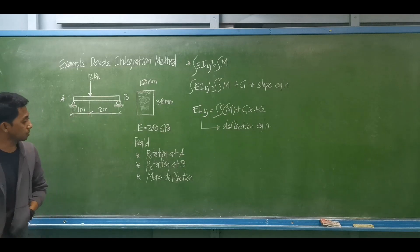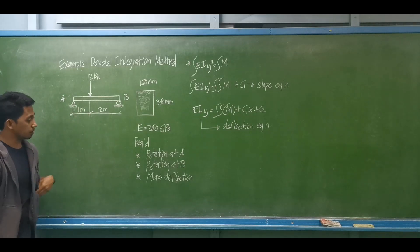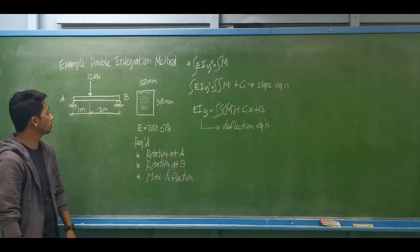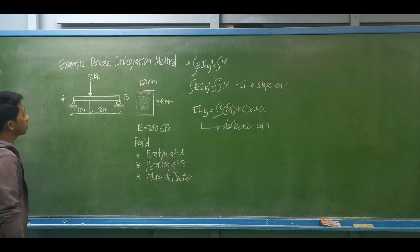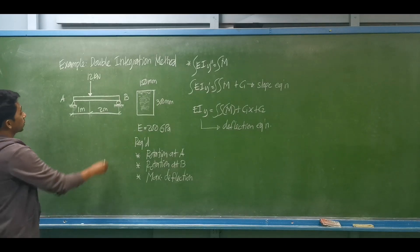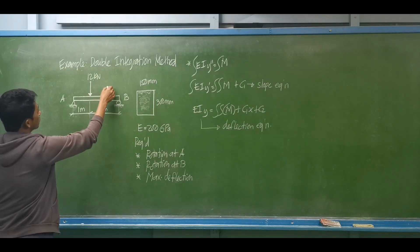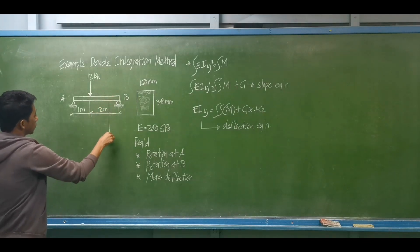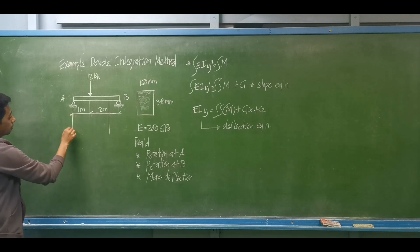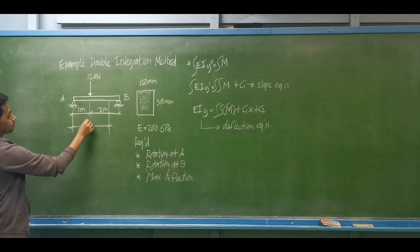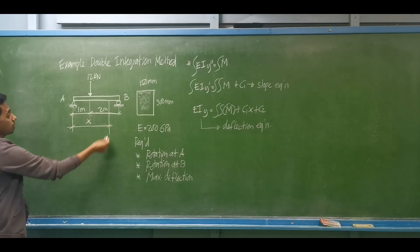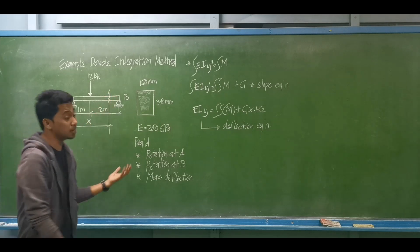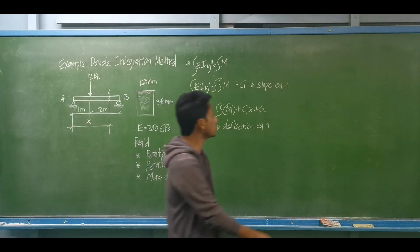To determine the maximum deflection, we need the deflection equation. First, you have to set your cut section — let's say this is our cut section at a distance x from A. We cut this portion and expose it.